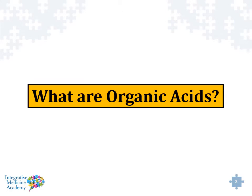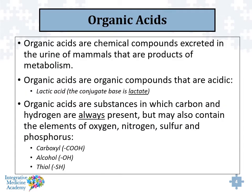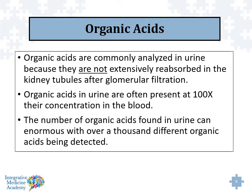So what are organic acids? Organic acids are chemical compounds that are excreted in the urine of mammals that are reflective of metabolism. Some organic acids like lactic acid are normal things that we produce. And then there are organic acids that can be produced by organisms that live inside our digestive system. Organic acids will always contain carbon and hydrogen, but they may also contain oxygen, nitrogen, sulfur, and phosphorus. They're commonly analyzed in the urine because through kidney filtration, organic acids in the urine are often 100 times the concentration compared to the blood, and they're reflective of underlying body metabolism, biochemistry, and imbalances in those areas.